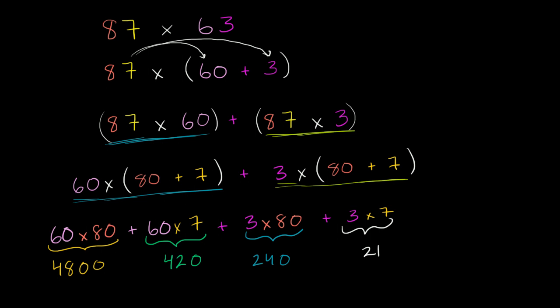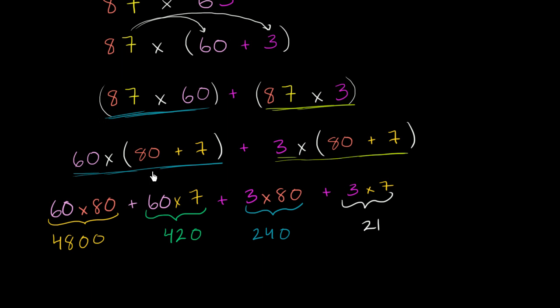And then to get the product, we can add these together. And you might be saying, hey, Sal, I know faster ways of doing this. But the whole reason I'm doing this is to show you that that fast way you knew how to do it, it's not some magical formula or some magical process you're doing. It just comes out of really distributive property and hopefully a little bit of common sense. So what is this going to be equal to? Well, we could add them all up, 4,800 plus 420 plus 240 plus 21.